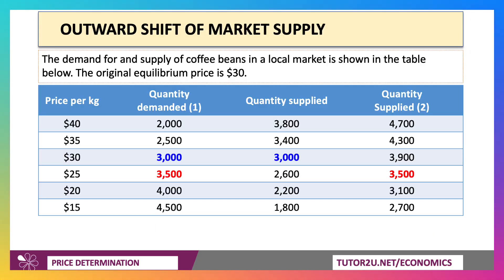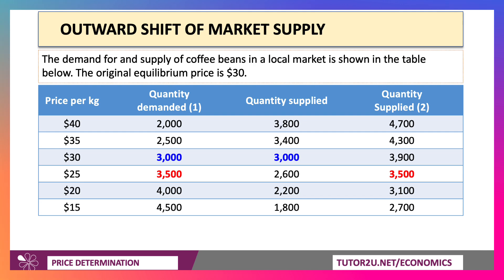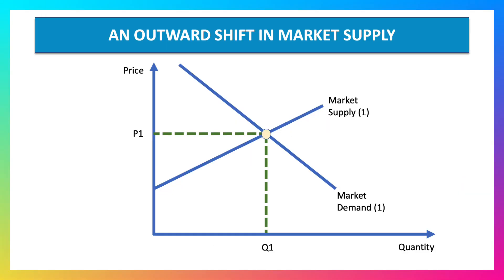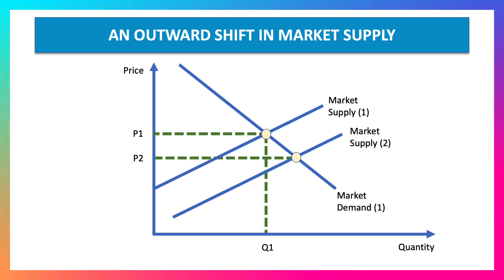Equally, there could be a shift of supply. Here's the demand for and supply of coffee beans in a local market. The original equilibrium is $30 with a quantity of 3,000. Supply has increased by 900 units at each price. So the new equilibrium will be lower because there's greater supply on the market — it'll be $25 with 3,500 tonnes bought and sold. Here's our original equilibrium P1, Q1. Market supply shifts out to the right — an increase in supply, more can be supplied to the market at each price. That causes the equilibrium price to fall to P2 and the quantity to expand to Q2.